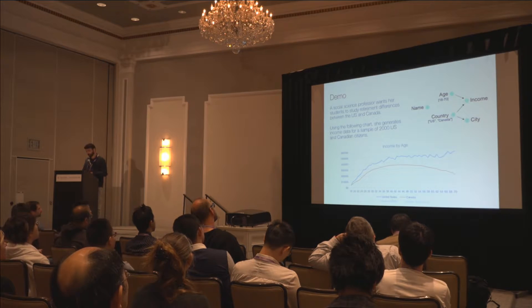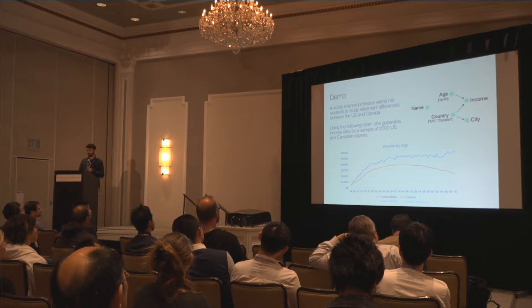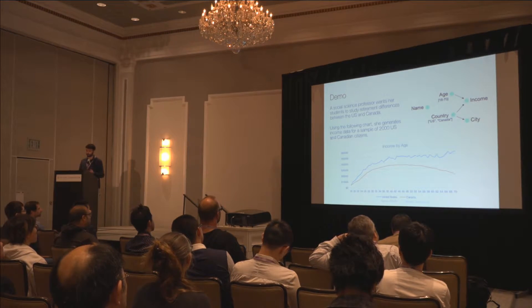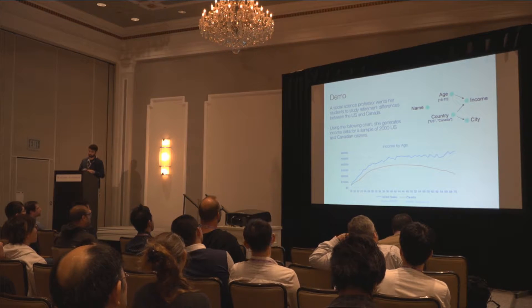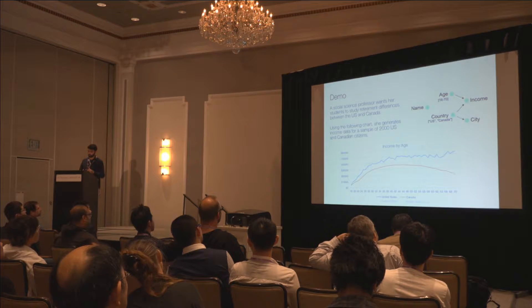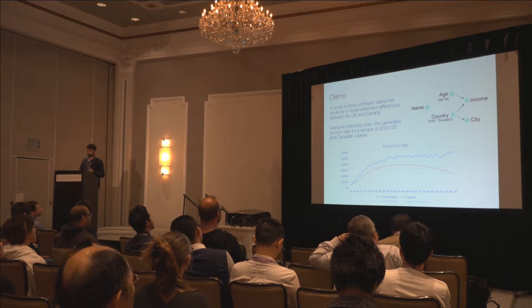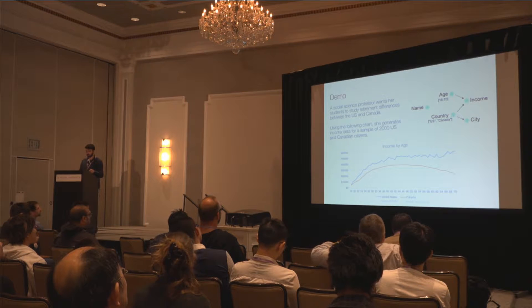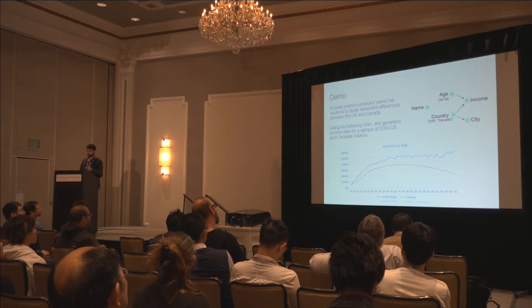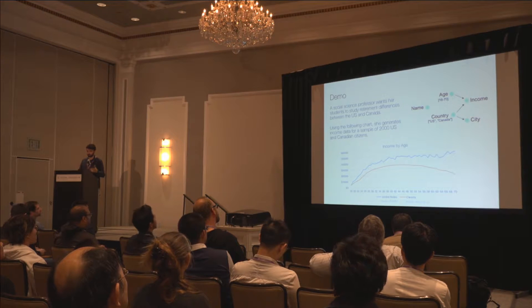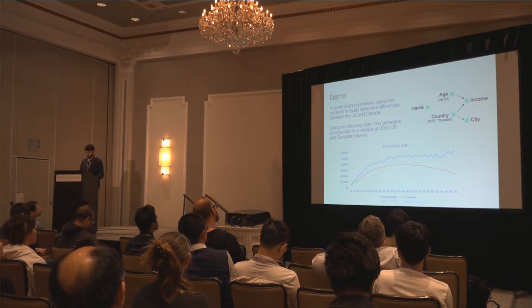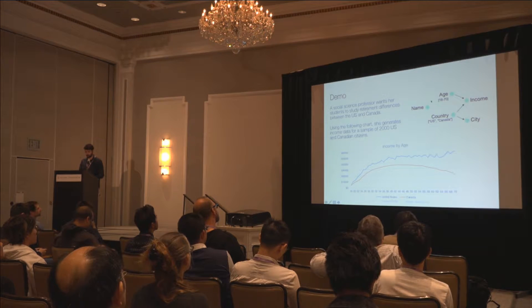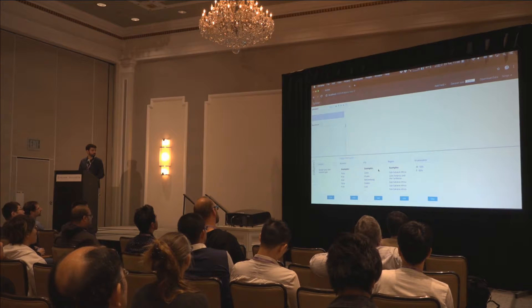So imagine a social science professor who wants to help students to study differences in retirement age between US and Canada. And she has this graph from public records that describe the data, but without samples for her students to apply data-driven methods to. So she quickly decided to build samples that will lead to these differences in income. And here, you can see the fields like country, age, determine income, and country, determine city. She also asked name to her data to make appear like it's coming from a real set of people. So let's go quickly to the demo.